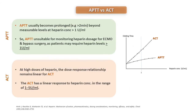aPTT usually becomes prolonged beyond measurable levels at heparin concentrations greater than 1 unit per mL, making it unsuitable for monitoring heparin dosage in ECMO, bypass surgery, and dialysis machines, as these patients require more than 1 unit per mL. ACT, by contrast, maintains a linear dose-response relationship up to 5 units per mL, as seen in the curve.